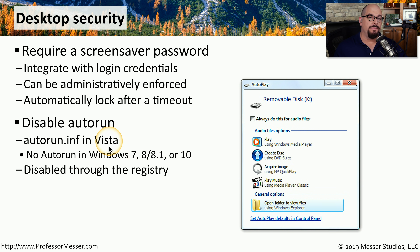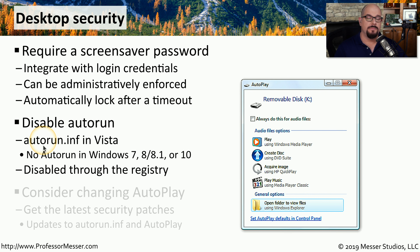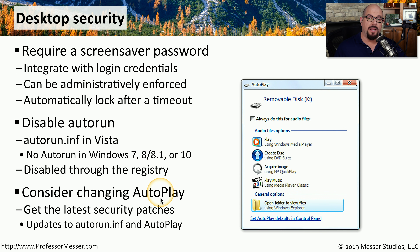In Windows Vista and earlier versions, there was a feature called Auto Run that automatically launched an application when you inserted media such as a DVD-ROM or CD-ROM. This became a significant security concern, so in all editions of Windows after Vista — including Windows 7, Windows 8.1, and Windows 10 — Auto Run is not available. There is a similar feature called Auto Play, which examines an inserted drive and, if it finds audio files for example, can automatically launch an application to play them. Although Auto Play has a much narrower focus than Auto Run, some people still feel it has security concerns, so administrators have the ability to enable or disable this capability.